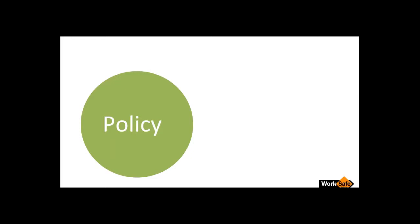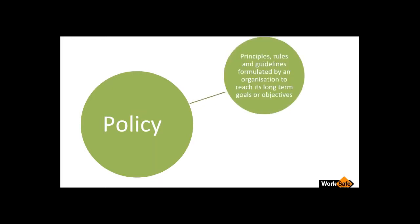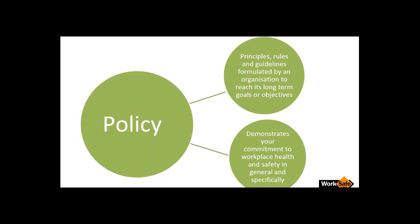Now we're going to look specifically at policy — what a policy might contain and how you might set it out in document format. In general, a policy is formulated by an organization to define or help understand what the rules or guidelines are to reach its long-term goals. As far as workplace health and safety is concerned, it demonstrates your commitment to WHS. Your workplace should have an overarching workplace health and safety policy, but then there will be policies specific to particular areas of activities that you undertake — those are the two components of a WHS policy.